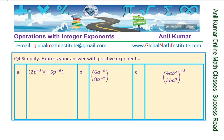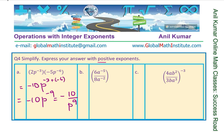Next, we need to simplify and express the answer with positive exponents. We apply the exponent rules. Numbers 2 and minus 5 can be multiplied together, giving minus 10. Then p to the power of minus 3 and minus 6 — adding them gives minus 9. That gives us minus 10 over p to the power of 9, since we should write them with positive exponents.